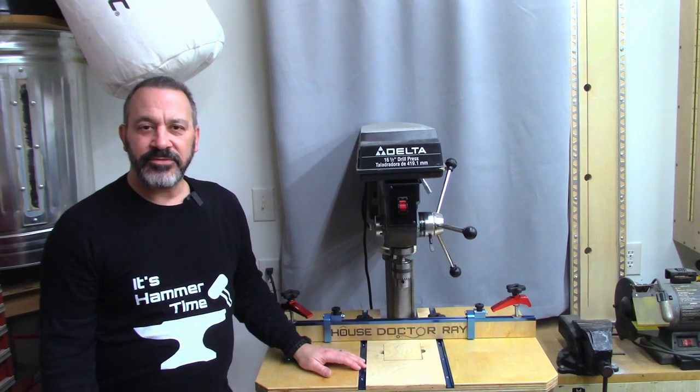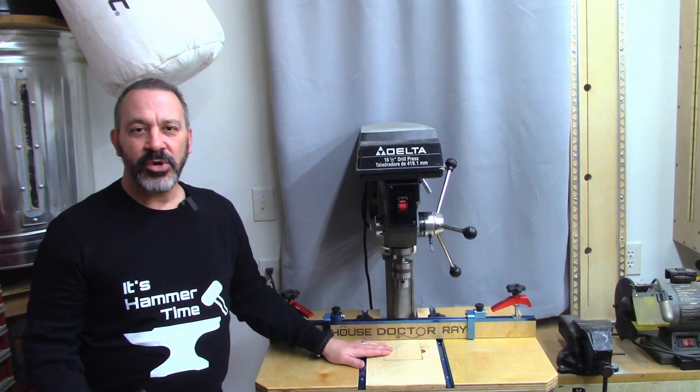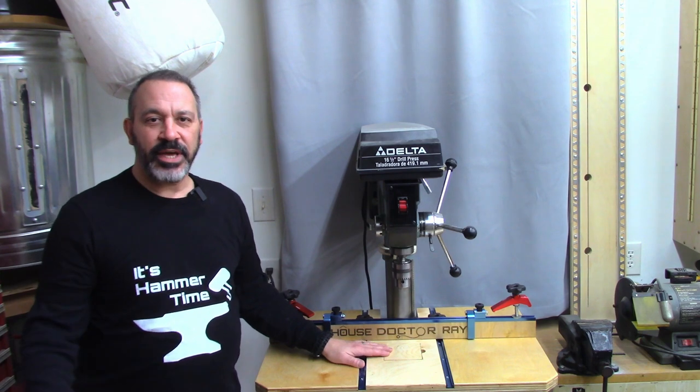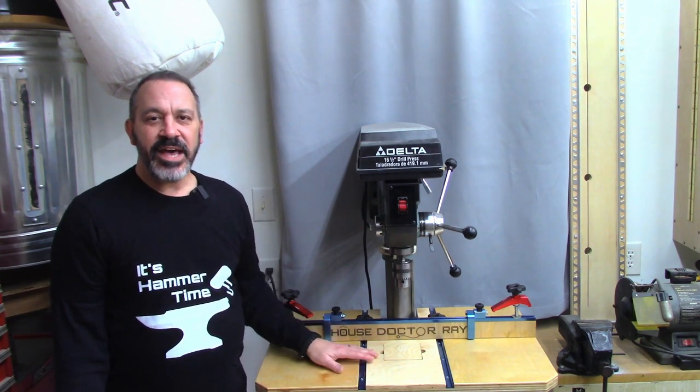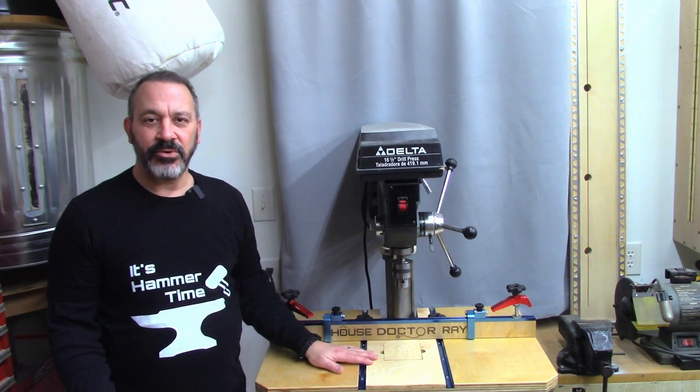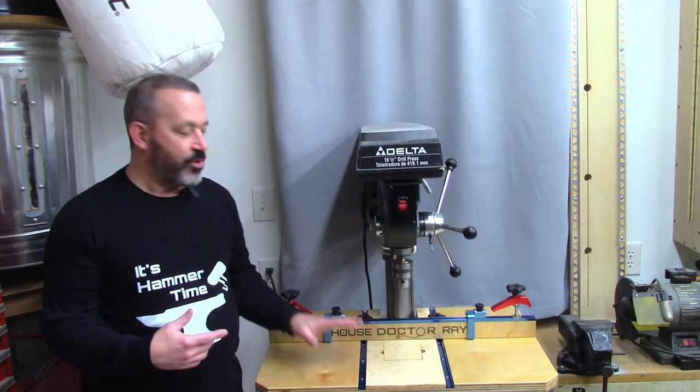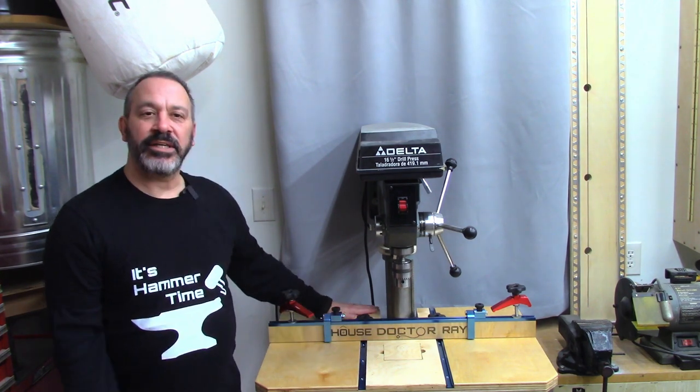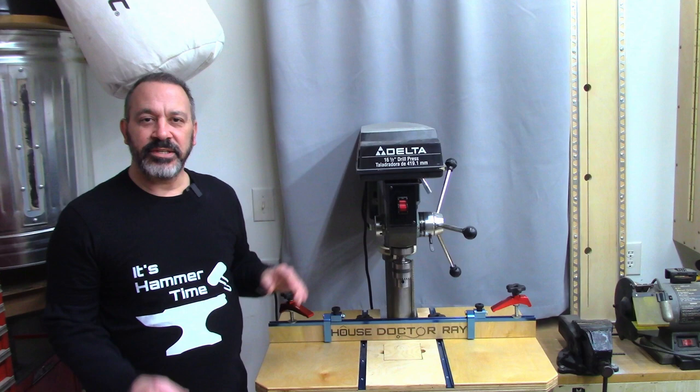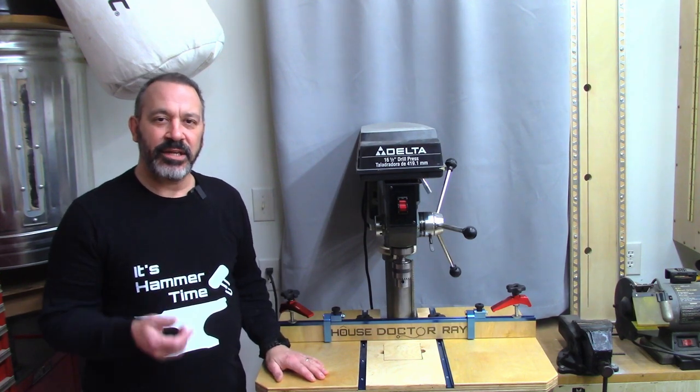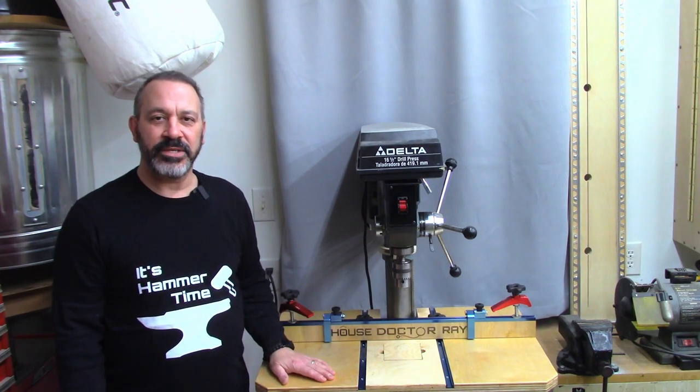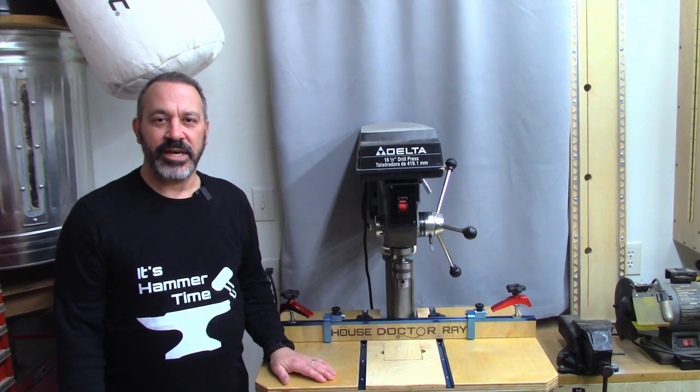Whether you followed the build in my latest video of this drill press table, or somebody else's, or you came up with your own design, you're going to have an issue with being able to raise and lower the table of the drill press. When you extend the table out like this, you're not going to be able to easily reach the controls in the back to unlock and raise and lower the drill press table. I'm going to show you how to fix that today.